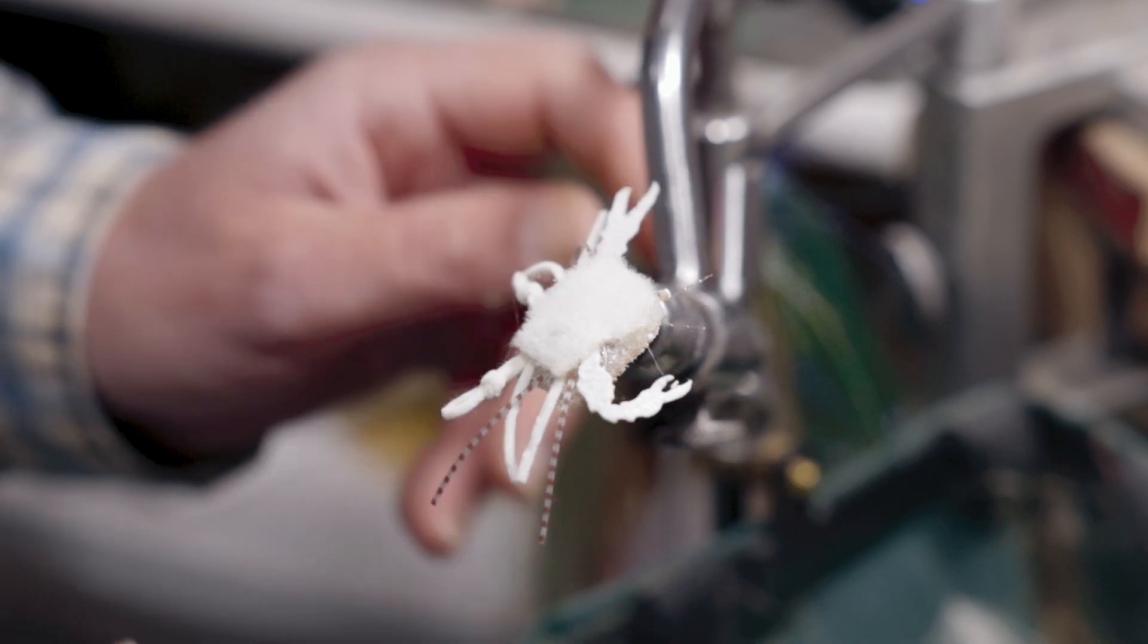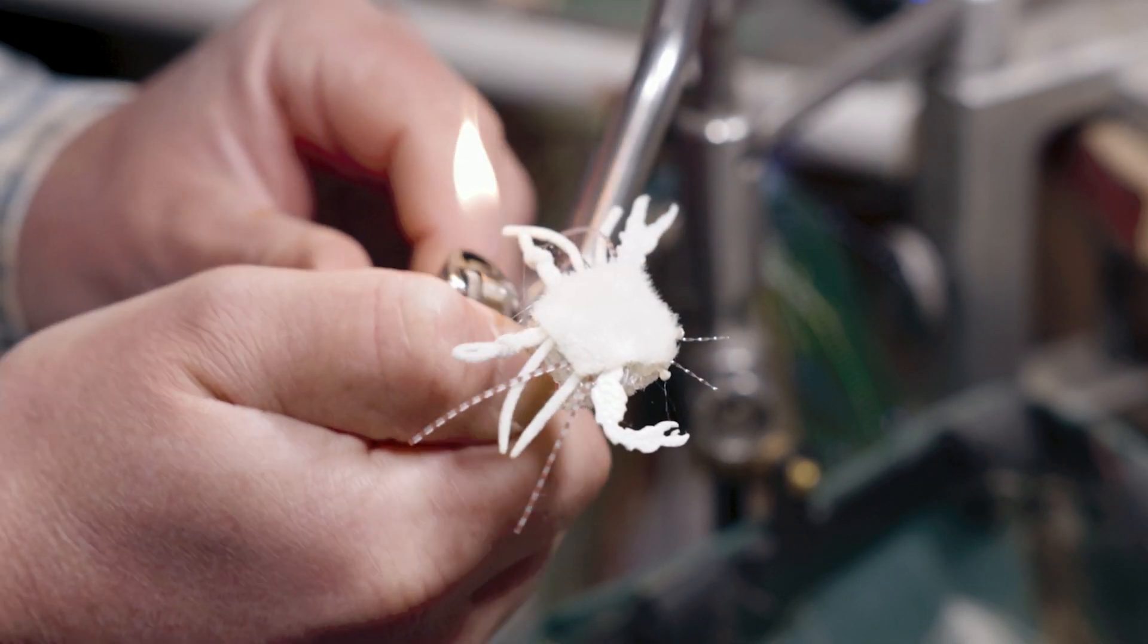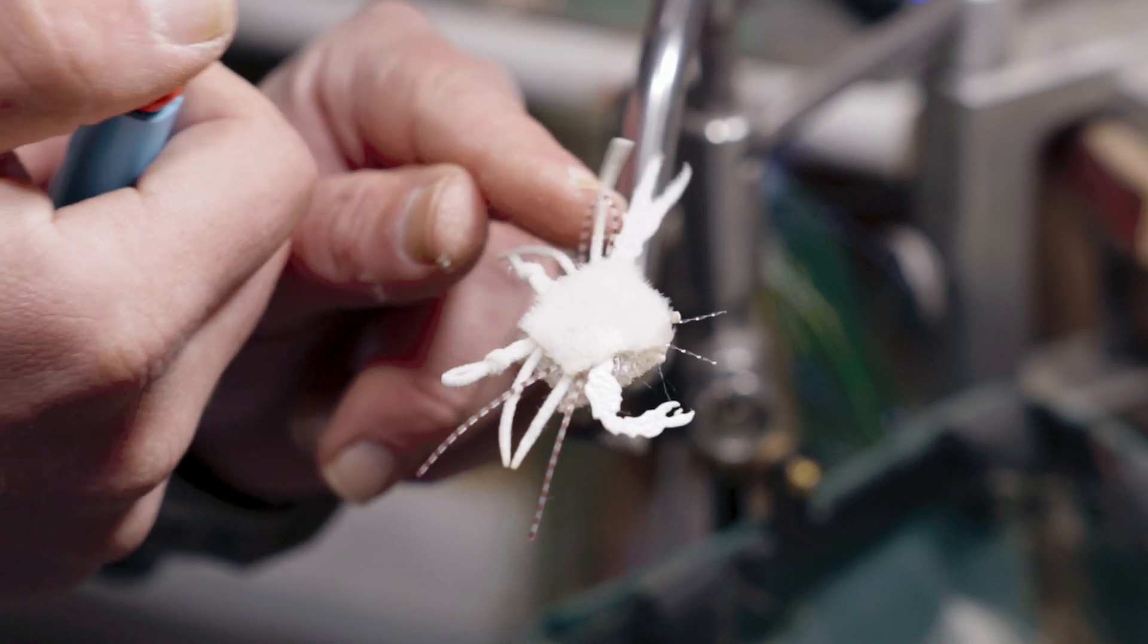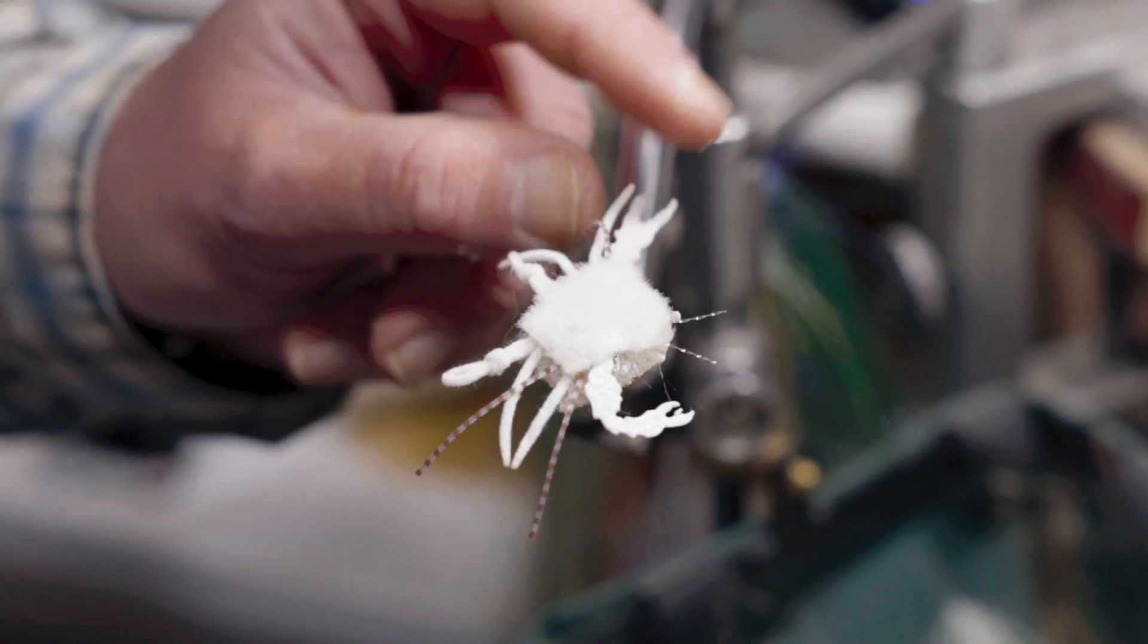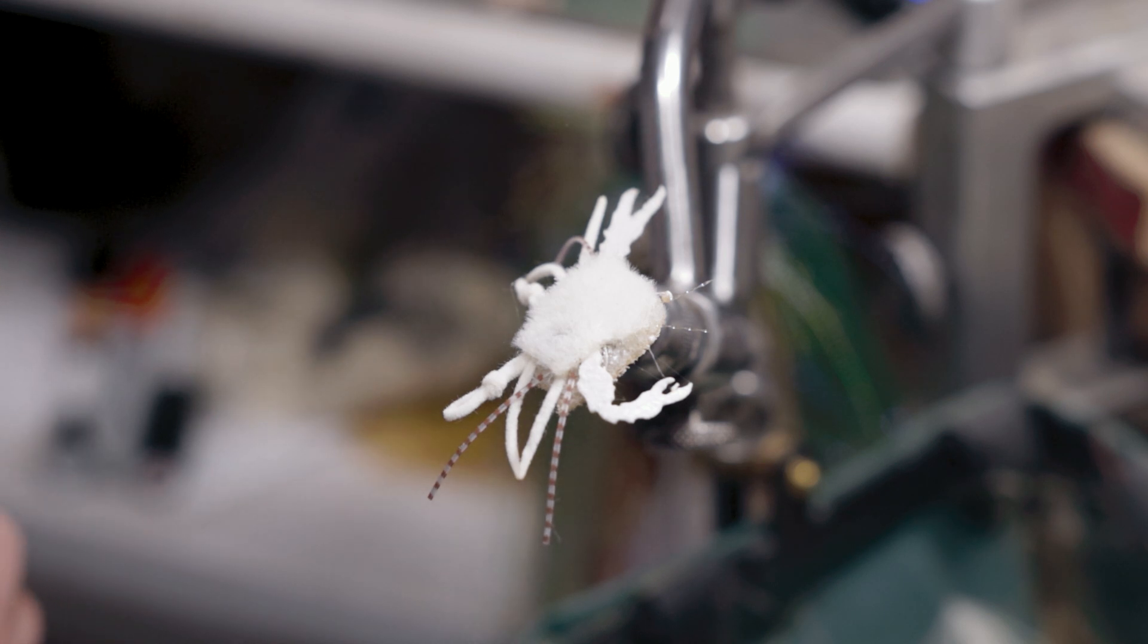And then I'll take a lighter and just singe the ends of the Ultra Chenille, make them pointy. And we'll put this guy aside and then give it a little bit of time to dry and then we'll give this fly a paint job.